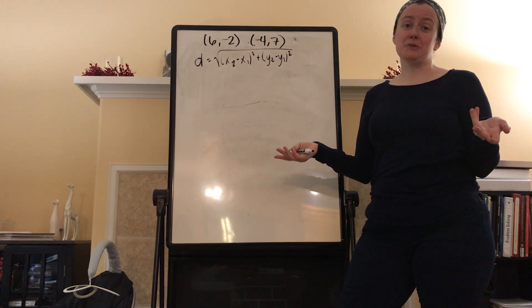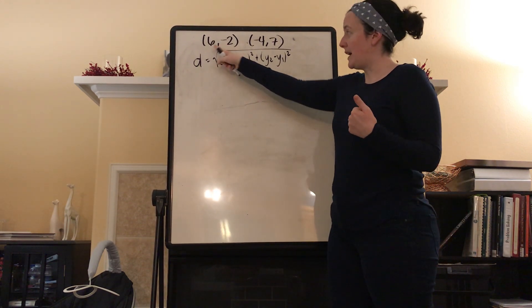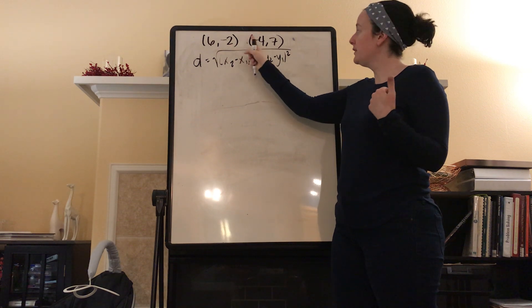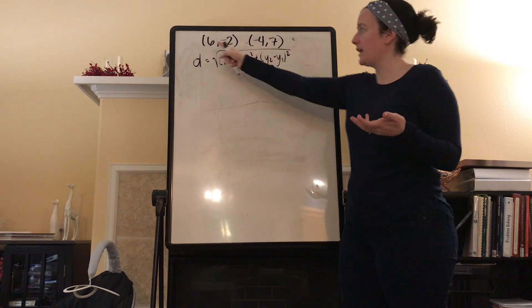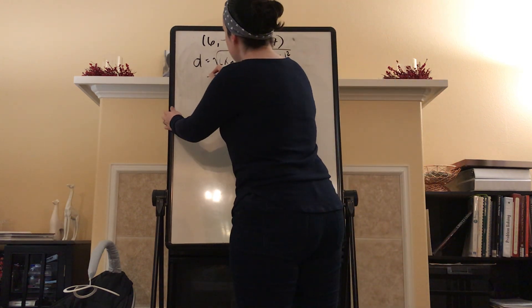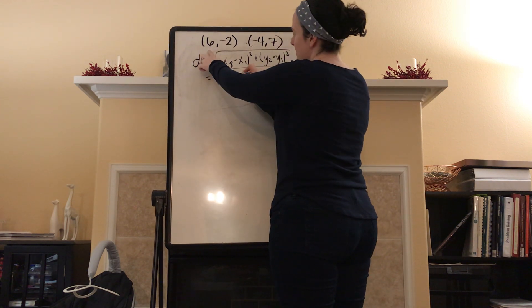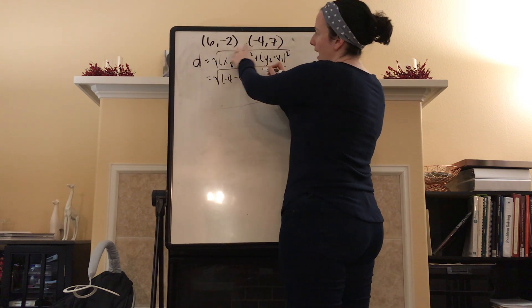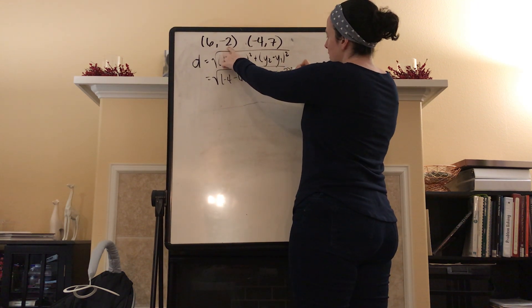From here, really all we're going to do is plug in a bunch of points. So here's my x value from point one, my x1, my y1, my x value from point two, and my y value from point two. So x1, y1, x2, y2. Pretty simple. The distance is equal to the square root of my x2 is -4. I'm going to then subtract 6 and square it. Add to that 7 minus -2 squared.